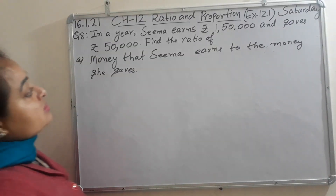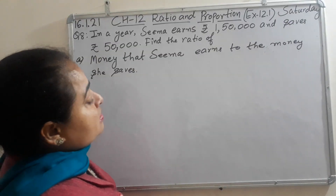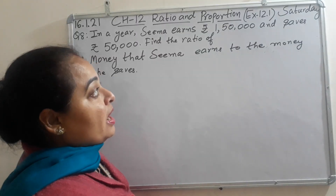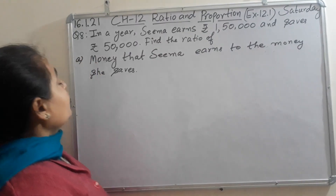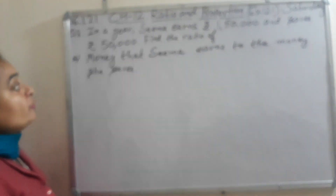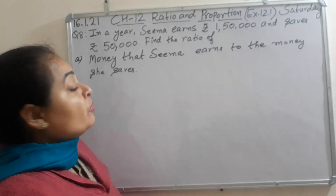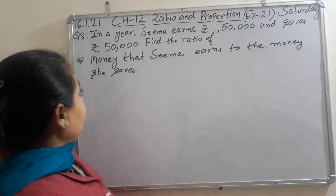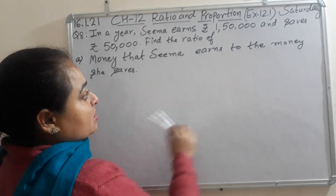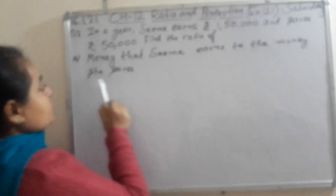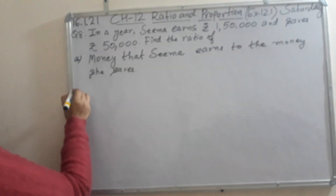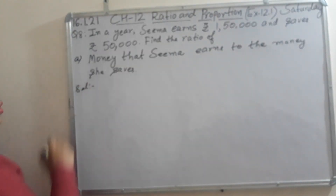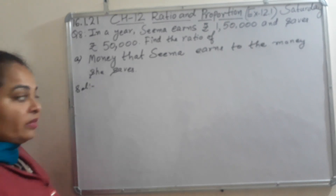In a year, Sema earns Rs. 1,50,000 and saves Rs. 50,000. Find the ratio of: Part A is money that Sema earns to the money she saves. To solve this, first of all you will write down the given information.